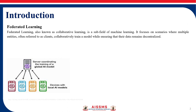This is similar to how federated learning works in distributed systems. Each device — a smartphone or a computer — uses its own data to improve a model. Then the improvements are shared with a central server that combines them to improve the overall model, while the actual data remains on the original device, preserving its privacy.